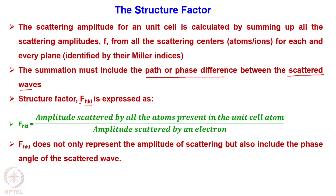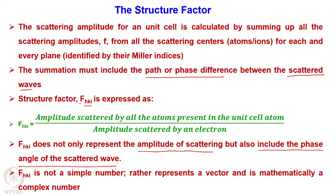F_hkl does not only represent the amplitude of scattering but also includes the phase angle of the scattered wave. This phase angle is important, and we will come to this discussion at a later stage. The structure factor F_hkl is not simply a number - it represents a vector and, in mathematical terms, it represents a complex number.